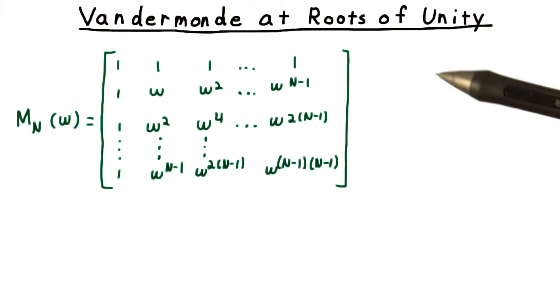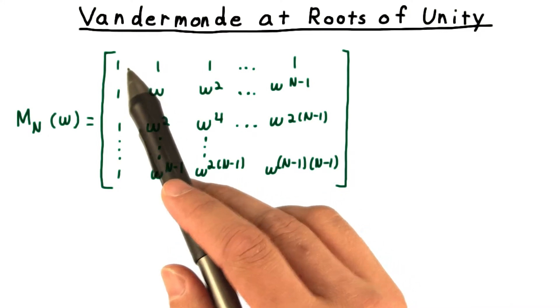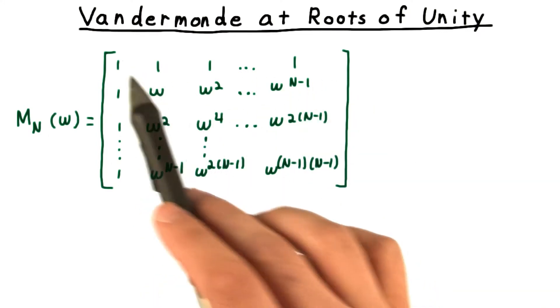Let's see what the Vandermonde matrix looks like at the complex roots of unity. Each row corresponds to the powers of one of the roots.